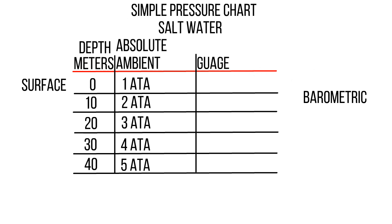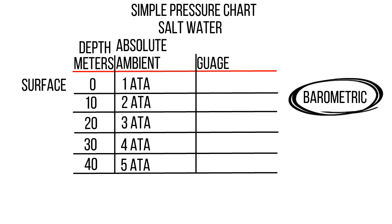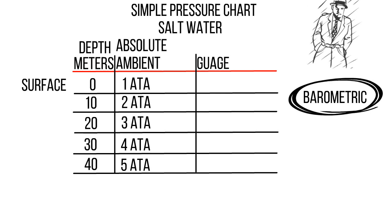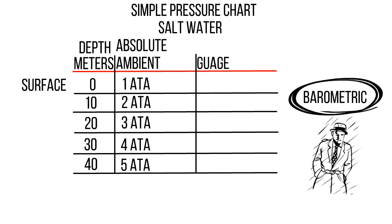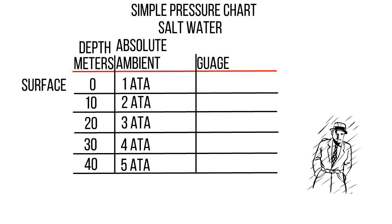The next column will be gauge pressure. Let's look at barometric pressure quickly — barometric pressure is to do with the weather. There won't be questions about it. Barometric pressure could be an answer, but if you see it as an answer, it is not the right answer.